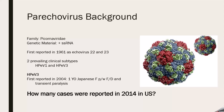Some background about parechovirus, which is what our hypothetical patient had. It's from the Picornaviridae family — a naked, positive single-stranded RNA virus, which was first reported in 1961 as previously echovirus 22 and 23. Due to decreased protein homology below 30%, they were reclassified into the new parechovirus subclass.